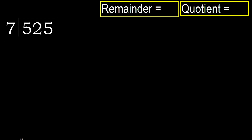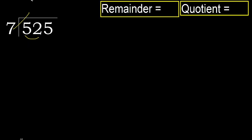525 divided by 7. 5 is less, therefore next. 52 is not less, therefore with 52. 7 multiplied by which number is nearest to 52.